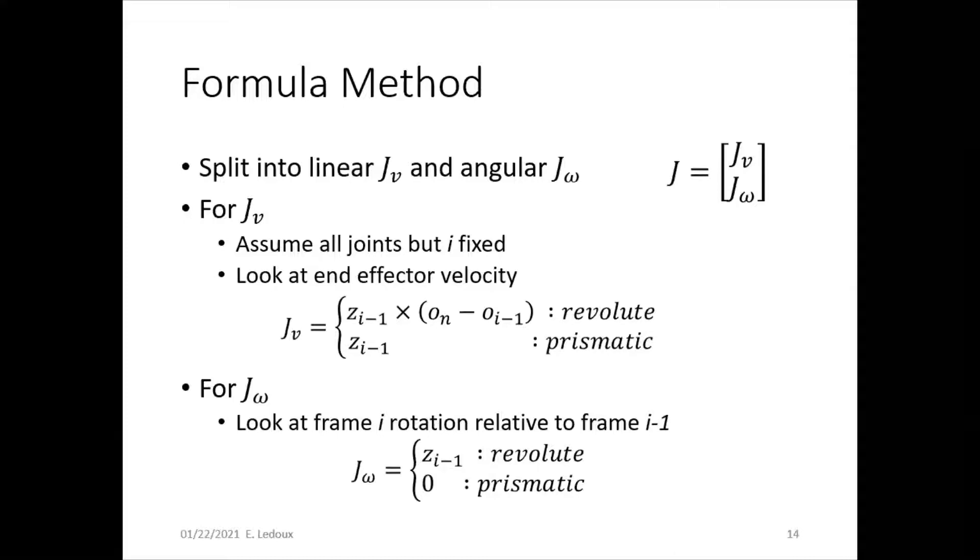We can split the Jacobian into linear and angular, where the linear one is for the x, y, z, and the angular is for the roll-pitch-yaw. For the linear, assume all joints but the i-th joint, so whatever you're working on is fixed, and look at the end effector velocity. You would use these two formulas, the cross product for the revolute joint to get end effector velocity, and for the prismatic joint, you would just look at the velocity.